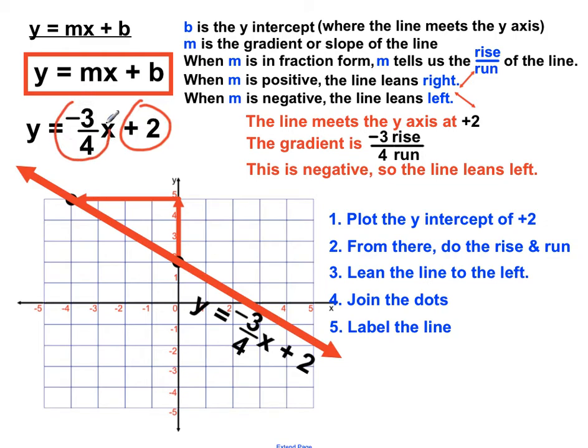This bit here was a bit trickier. It rises 3 and runs 4. But that negative tells us it's going to lean to the left. So that tells us to go up and across the left this time when we're creating our rise and run.